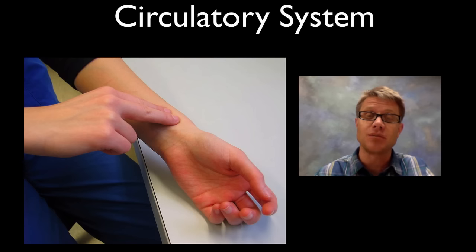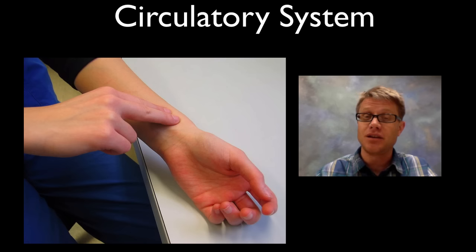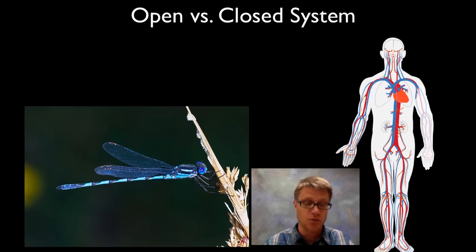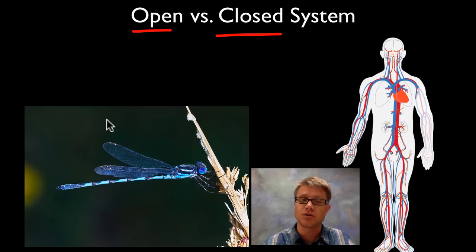It moves oxygen around my body, it moves carbon dioxide out of my body, and it moves nutrients to the cells in my body. So we need it to keep beating, and it does — something that we kind of take for granted. Before we get to the elements of the human circulatory system, you should know that there are different types of circulatory systems.